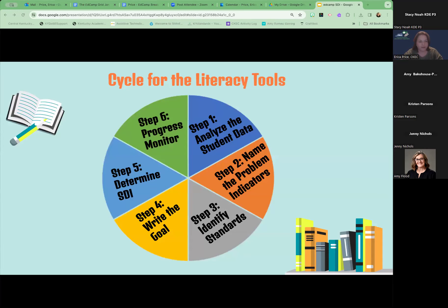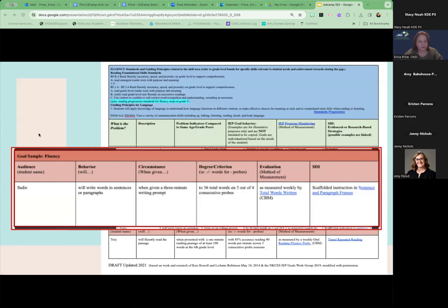The goals always need to be individualized to meet the needs of your specific students. But by focusing on one goal we were able to narrow that SDI down to specifics just to show you. So in our example here we have our audience Sadie, our behavior will write words and sentences or paragraphs, our circumstance when given a three-minute writing prompt to 36 total words on three out of four consecutive probes. Then we also have our evaluation, our method of measurement. This blue link actually takes you to that method of measurement and it's a CBM. So we have that directly in here to give you more information. And then we have our SDI linked in as well, so it's going to be sentence and paragraph frames. So it's all linked in, we can see all of it and we can see it all in action. So that is how the SDI tools are laid out. Each of them are laid out very similarly. Again, blue is your standards, green is your problem area, then we're going to come down to your sample goal. Up until this point, are there any questions?